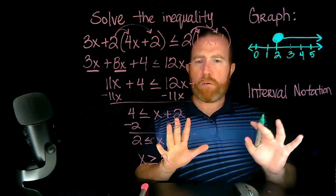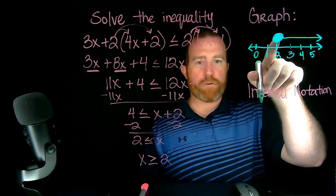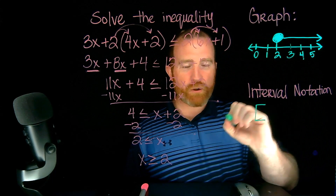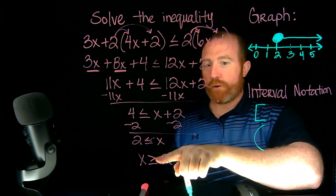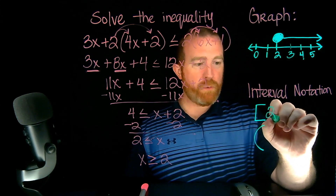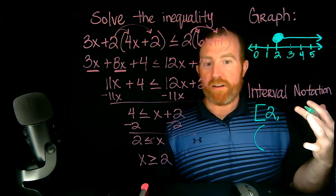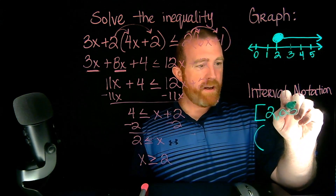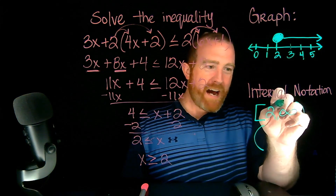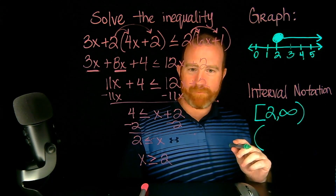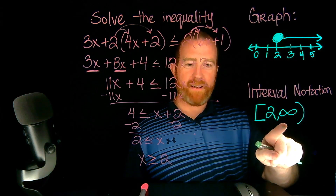Now, interval notation — this always confuses students. Anytime you're working with interval notation: if the inequality is greater than or equal to and the circle is filled in, that value gets a bracket. Bracket means included; a parenthesis means not included — that would be an open circle or just greater than. So here we have a bracket, then 2. Where does the solution set stop? It goes on forever, so we write infinity. Infinity always gets a parenthesis because you cannot count to infinity — you have no idea what value to include. So infinity never gets a bracket. And that's my solution set in interval notation: [2, ∞).